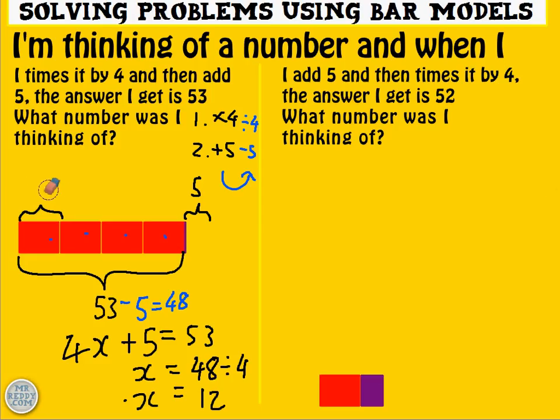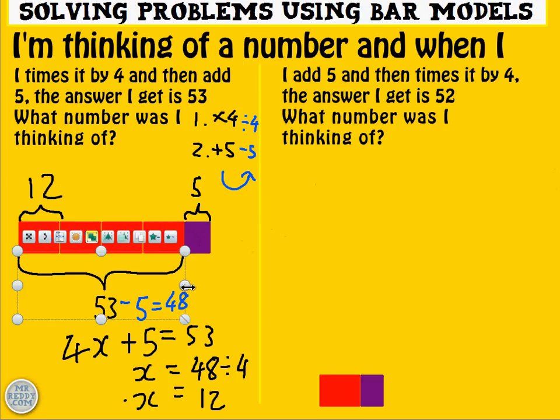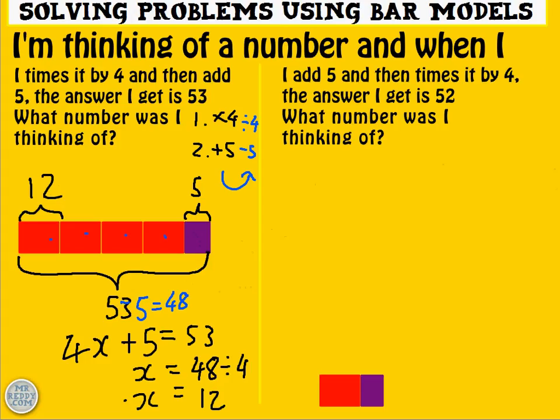You can quickly check that. If x is 12, when you times it by 4 and then add 5, you do indeed get 53. That whole bit is 53. Great. So that was correct. x equals 12.